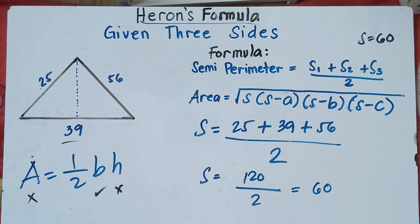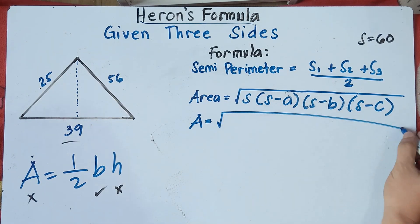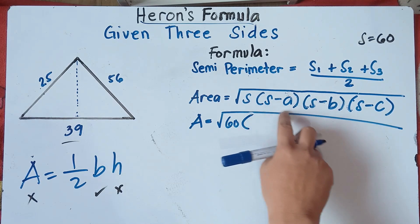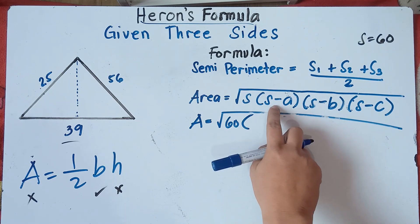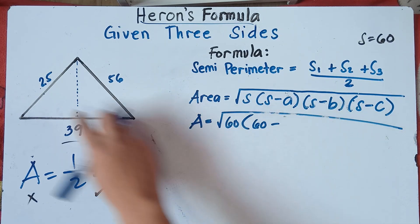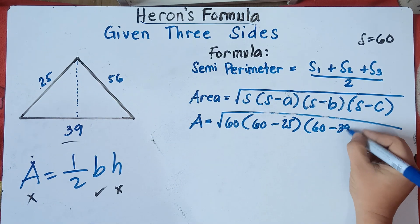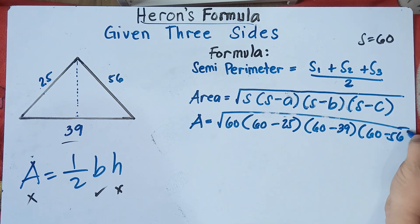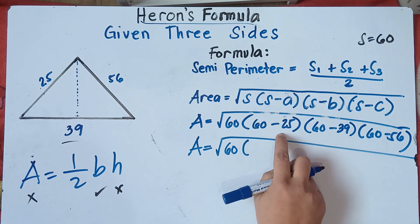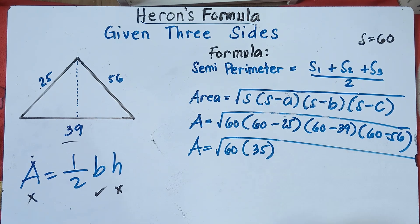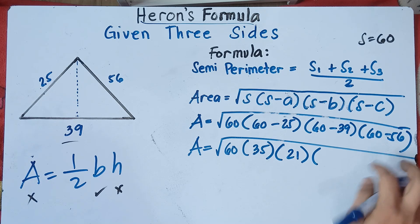Now that we have our S, the semi-perimeter, we need to find the area. Area equals the square root of 60 times (60 minus 25), times (60 minus 39), times (60 minus 56). So that's: 60 minus 25 is 35; 60 minus 39 is 21; and 60 minus 56 is 4.